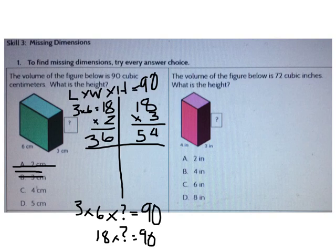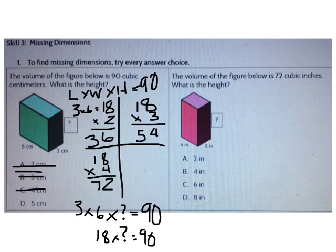Let's try C: 18 times 4 is 72 — not correct. Let's try D: 18 times 5 is 90. Yes, D is the correct answer — D is the missing dimension.